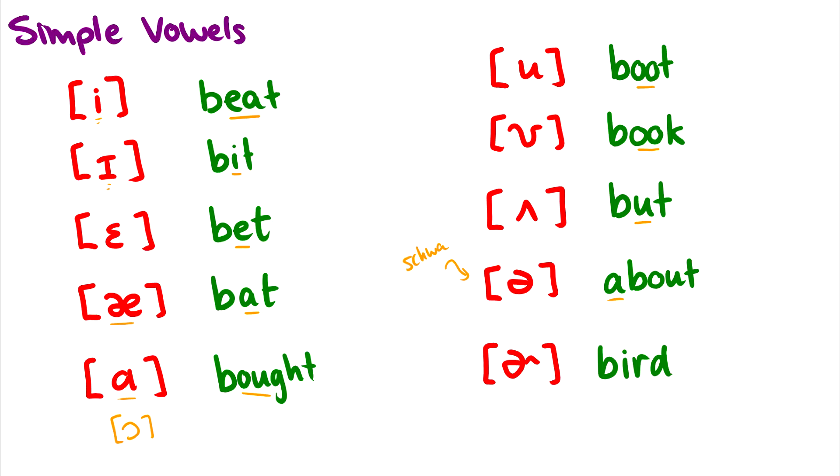Finally, we have this rhotacized schwa, this r-colored schwa, like in bird. I'm introducing it here because there's not really a good place to introduce it. This is the er sound in stressed syllables. In stressed syllables with the er, you have a schwar. This is an r-colored schwa.